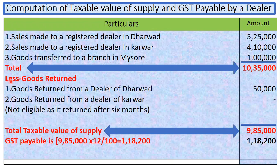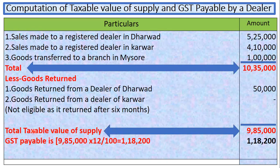Next, we are going to deduct less goods returned. Any goods which are returned within the span of six months should be treated as allowable deductions and have to be deducted from the total value of sales. The first transaction — goods returned from a dealer within one month — we are going to deduct that amount. The second return, goods returned from a dealer of Karwar, is not eligible as it was returned after six months. After deducting the eligible return, we get 9,85,000, which is the total taxable value of supply.